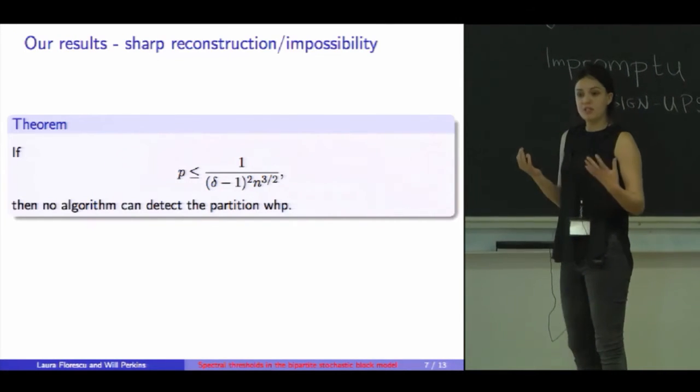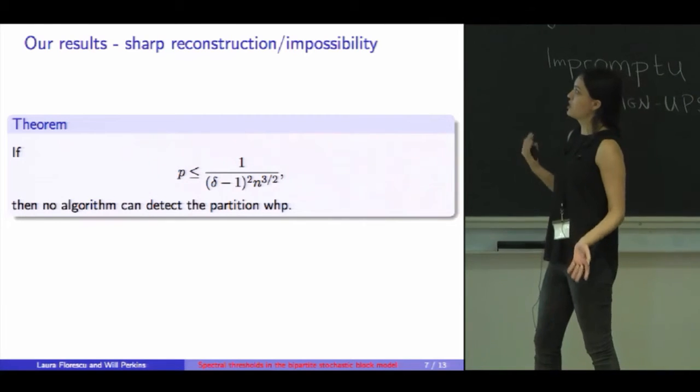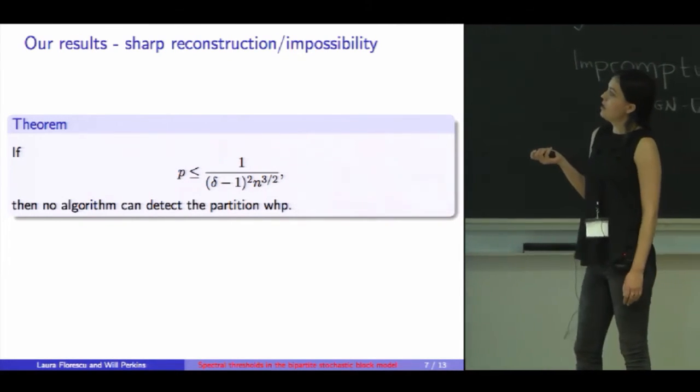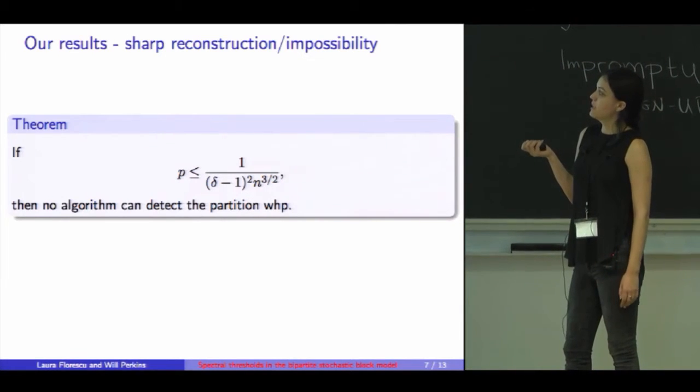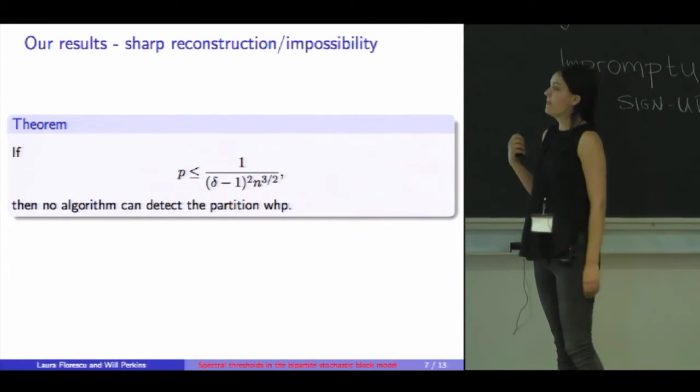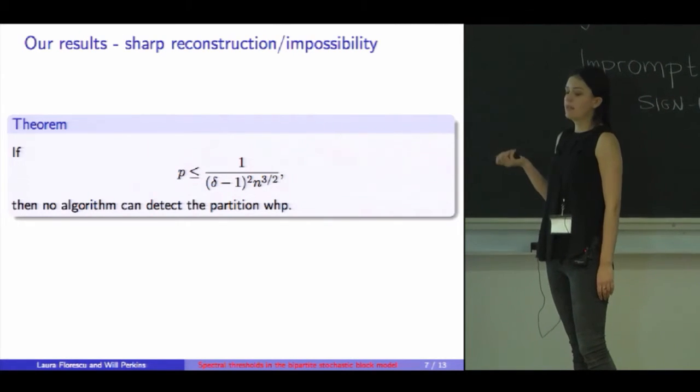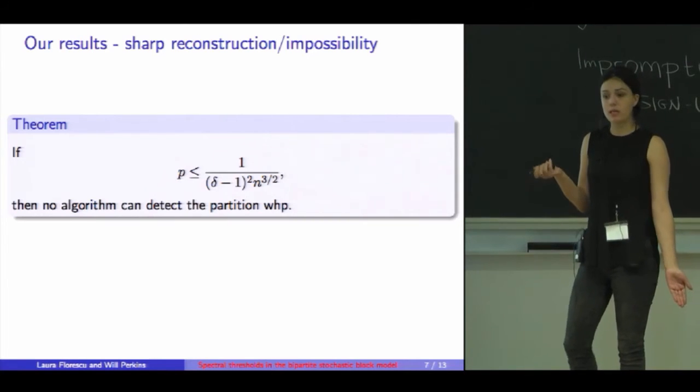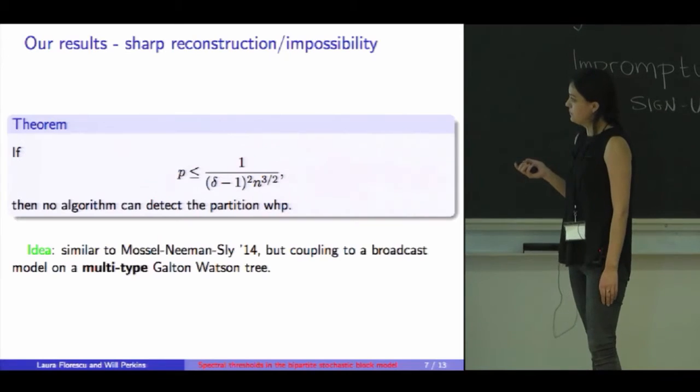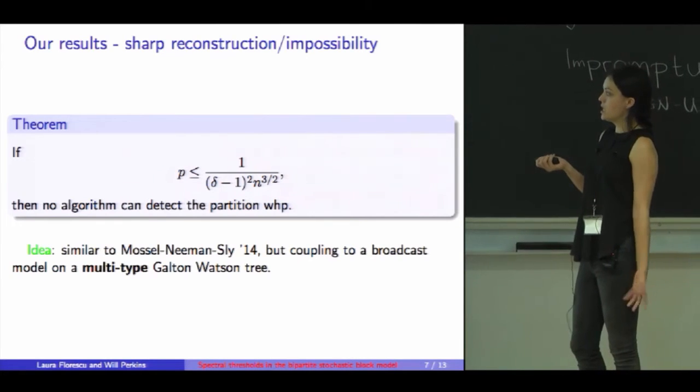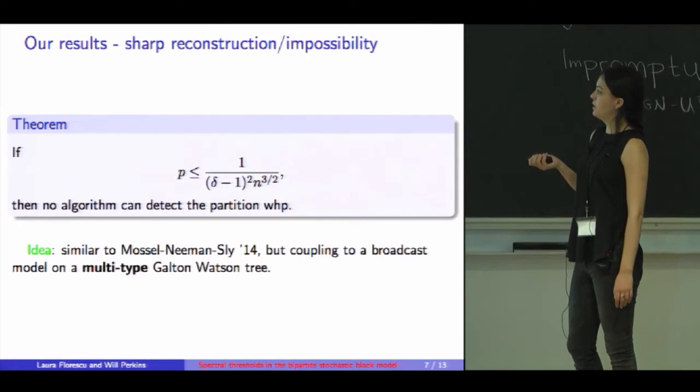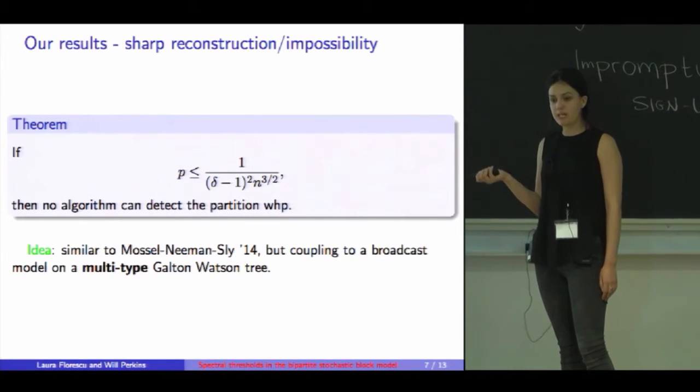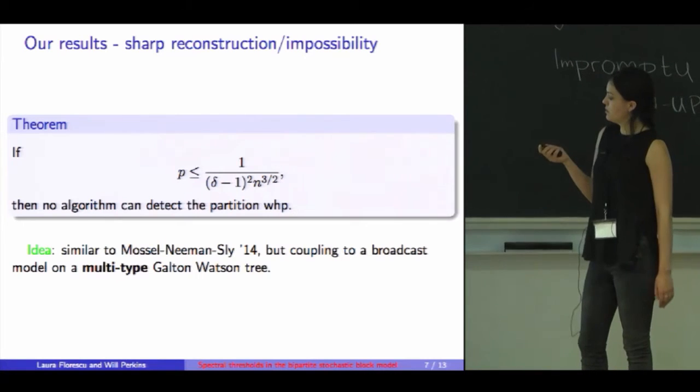Our results are twofold. Let me start with the sharp reconstruction impossibility results. If the edge density is less than 1 over (delta minus 1) squared N to the 3 halves, then no algorithm can detect the partition with high probability. It's information theoretically impossible to do better than random. The idea, if you're familiar with Mossel-Neeman-Sly, is to couple the model to a broadcast model on a multi-type Galton-Watson tree. In their case, it was a two-type. In our case, it's a multi-type Galton-Watson tree.